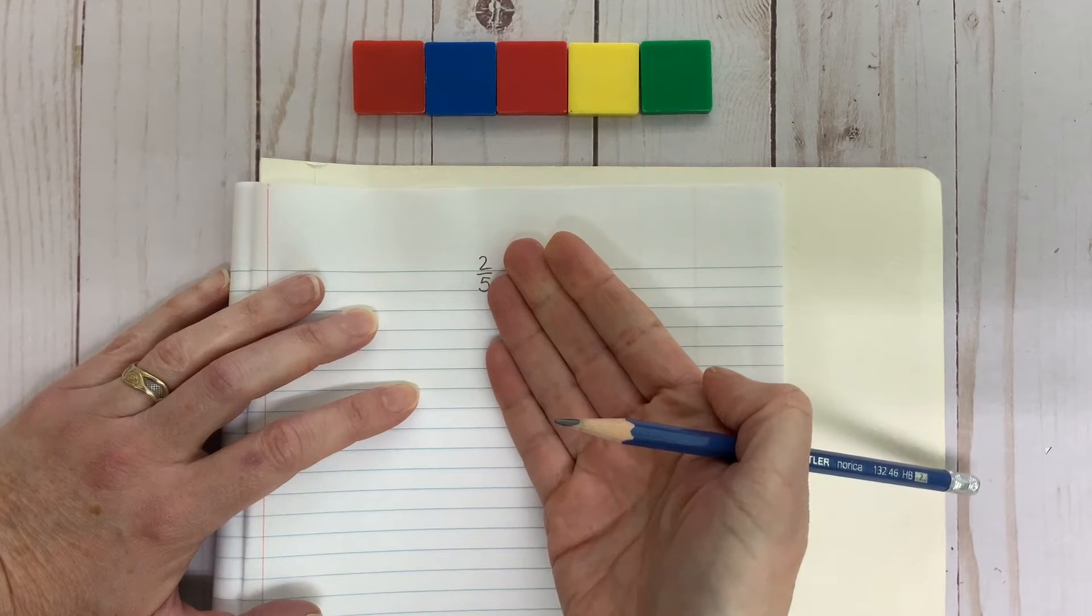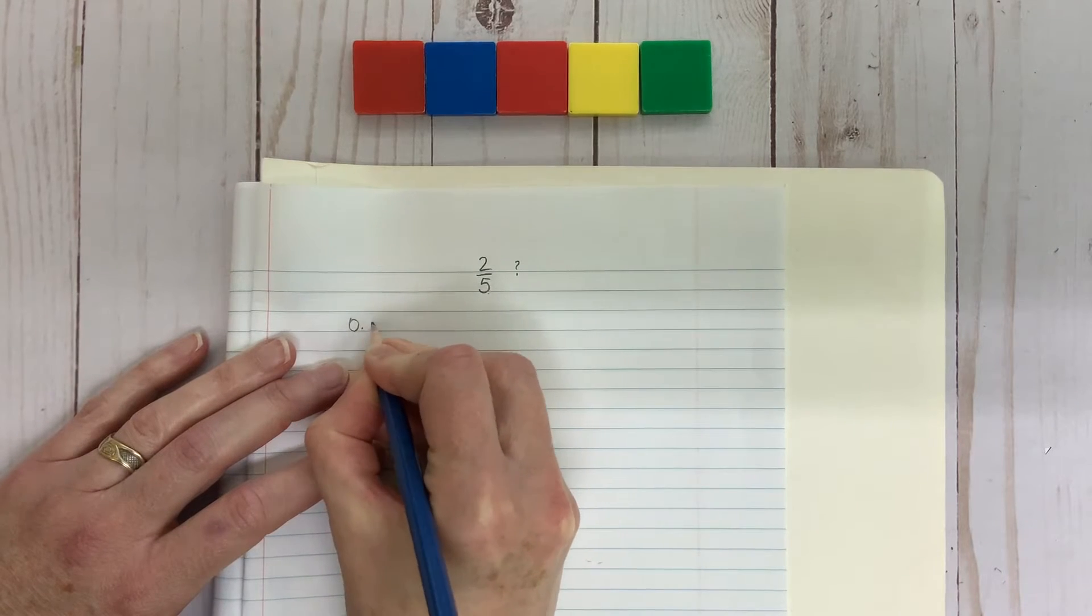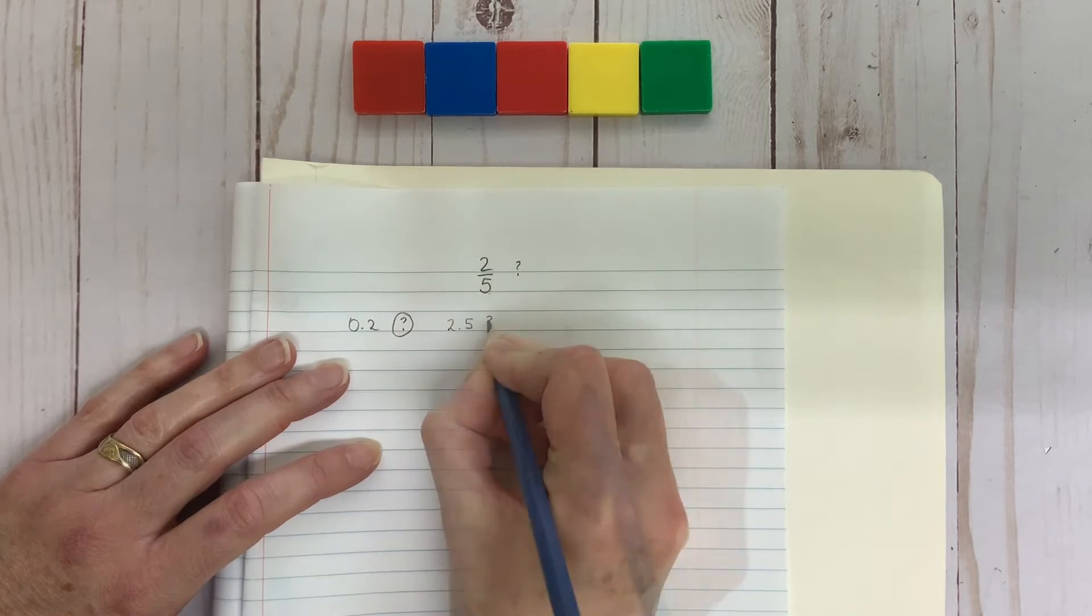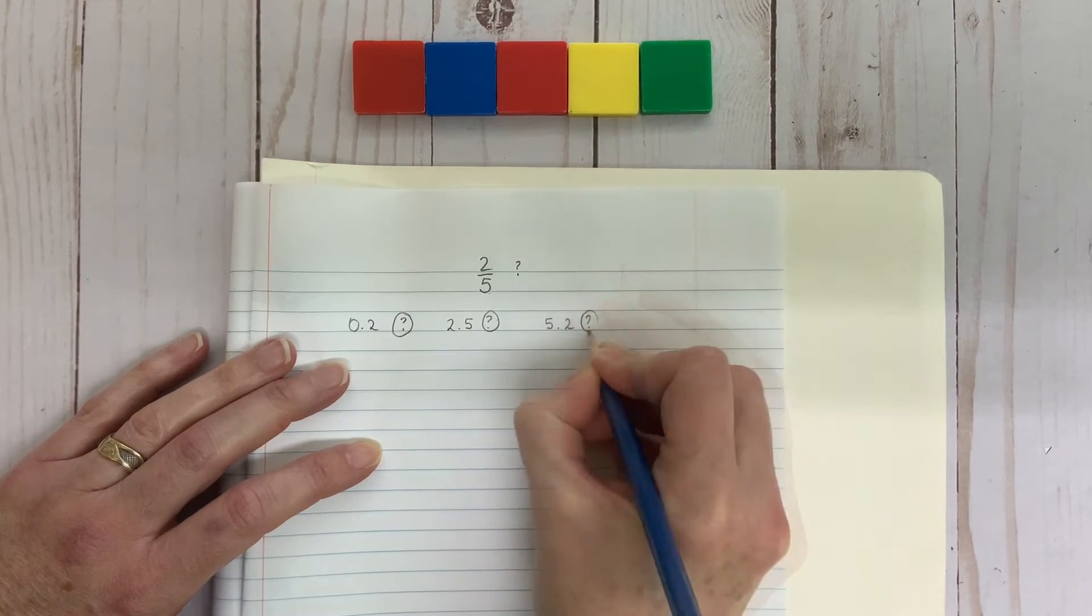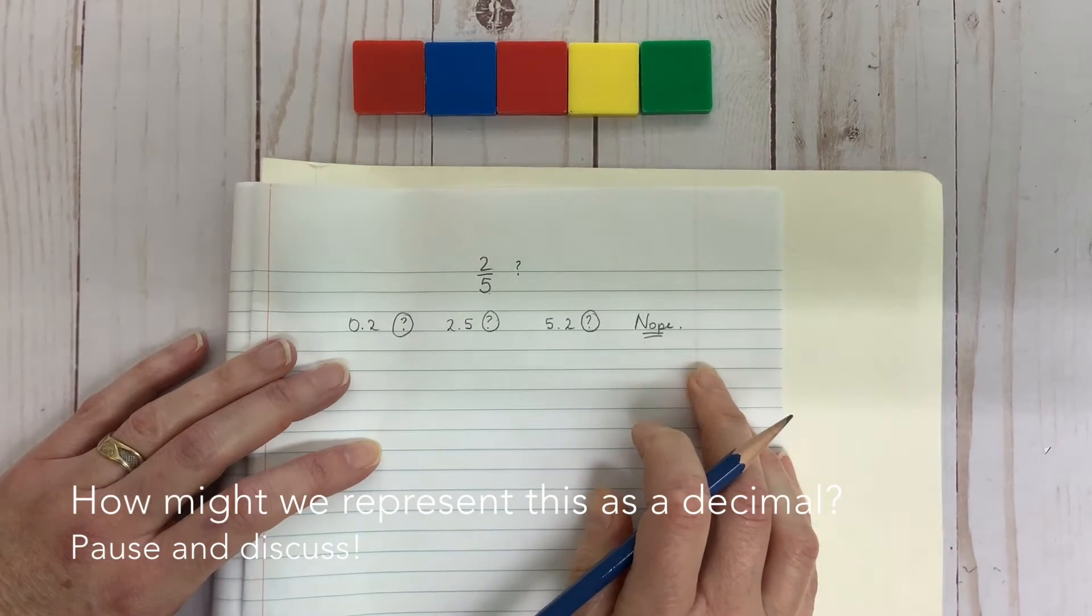Now, how do we represent this fraction as a decimal? Can we just do this? 0.2? Or maybe this? 2.5? Or how about 5.2? Hmm. Pause and discuss.